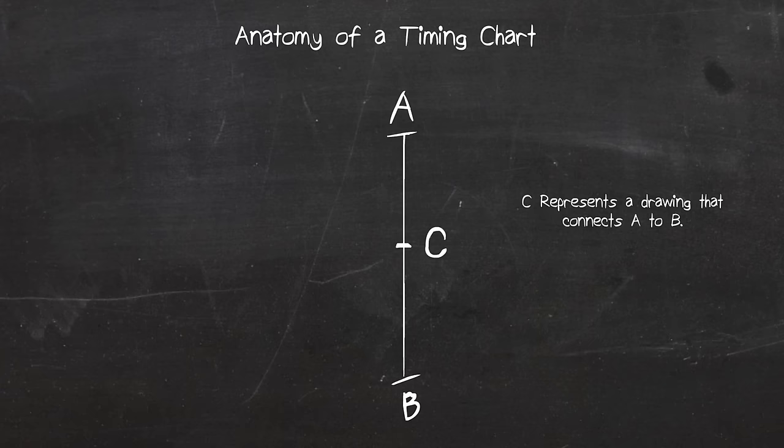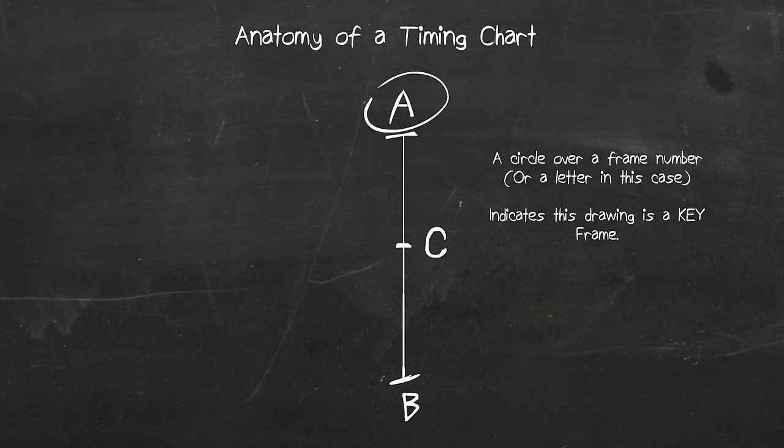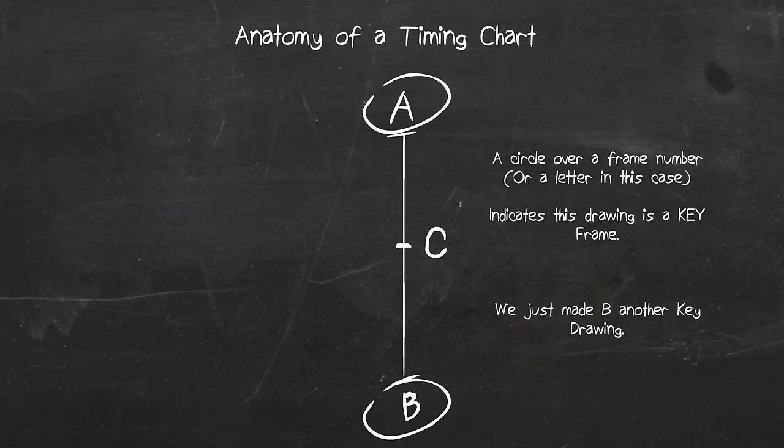I'm going to add a drawing in-between A and B. This drawing is called C. When animators circle a drawing or frame number, they are saying that this frame is a key drawing. A key drawing in the most basic sense is where the drawings are at its most extreme. Some animators also make keys based on contrast, change, or a different sense of story, or direction. They also call them story keys. I'm going to make drawing B a key as well.